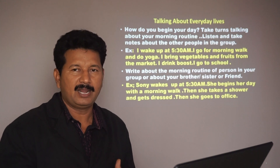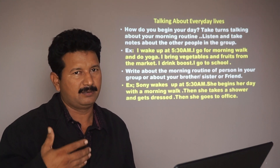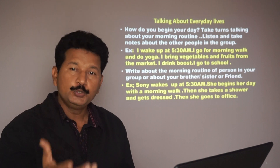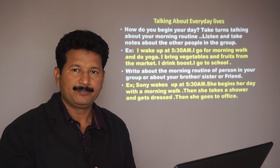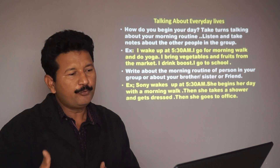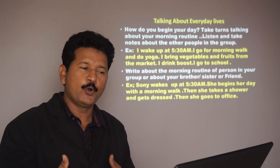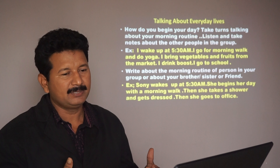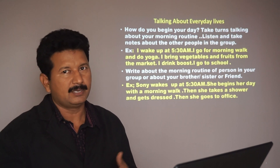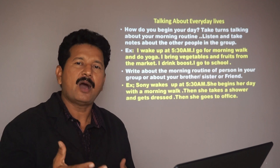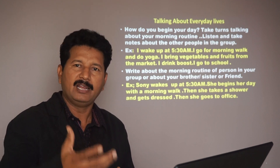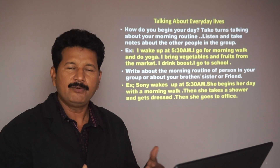Now we will see how to talk about everyday life with routine sentences. Here is what you do every day: I wake up at 5:30 a.m., I go for a morning walk and do yoga, I bring vegetables and fruits from the market, and I go to school. This is how you can practice your daily routine.